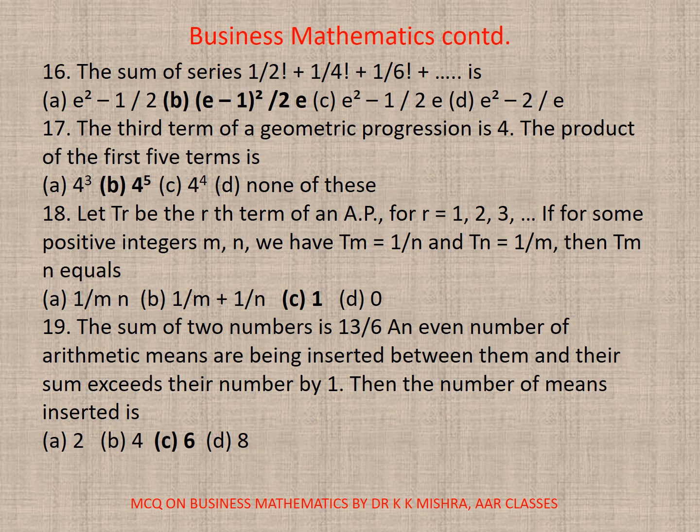Question 16. The sum of series 1/2! + 1/4! + 1/6!, etc. is, here correct option is B, (E-1)² / 2E. Question 17. The third term of geometric progression is 4. The product of the first five terms is, here correct option is B, 4 to the power 5.